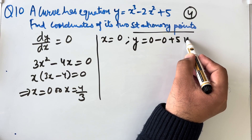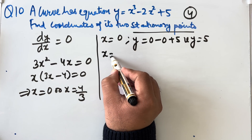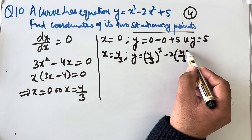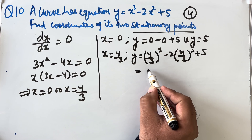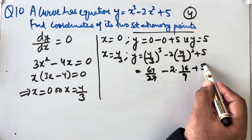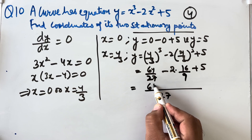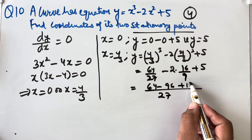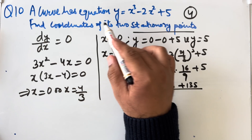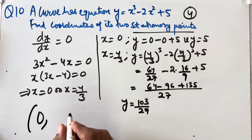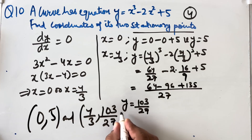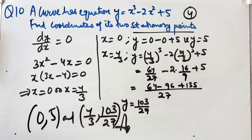At x = 0: y = 0 − 0 + 5 = 5. At x = 4/3: y = (4/3)³ − 2(4/3)² + 5 = 64/27 − 2(16/9) + 5 = 64/27 − 96/27 + 135/27 = 103/27. The stationary points are (0, 5) and (4/3, 103/27).